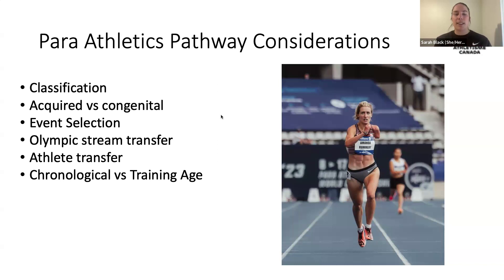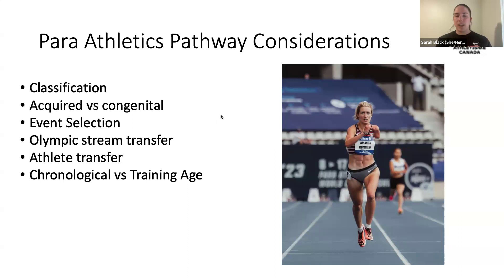Training age versus chronological age is an important consideration. On the para side, we could have athletes anywhere from age 16 to 70 competing at the Paralympic Games. Year-on-year progression is a key indicator of an athlete's realistic capacity and potential. If there are questions about when an athlete should start or when they need to get classified, track and field is a very integrated sport — athletes don't need to jump straight into the para athletics pathway if they're younger and able to integrate into athletics in other ways. Each athlete is unique, so we can work through individual questions on a case-by-case basis.